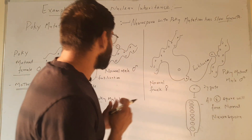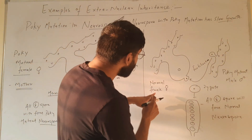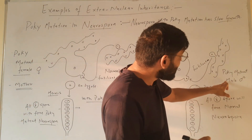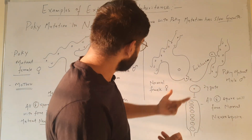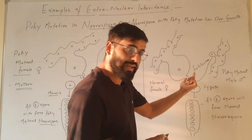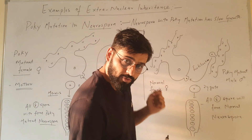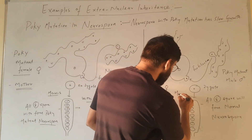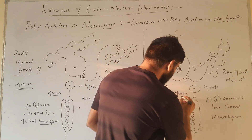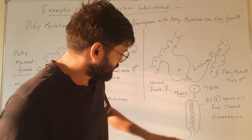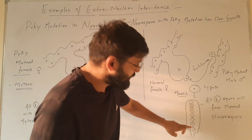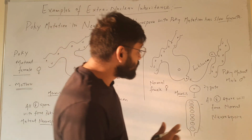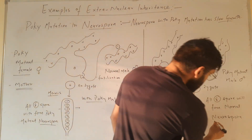Now look at another case where the female is normal and the male has poky mutation. Fertilization will occur, a zygote will form, and after the zygote there will be meiosis and 8 spores will form. All 8 spores after germination will form normal Neurospora.